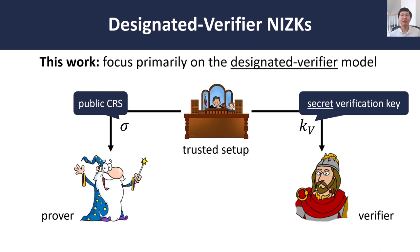In all of this work, we are going to focus on the common reference string model, where first there is a trusted setup algorithm that generates a common reference string that is known to both the prover and the verifier. In addition, we will oftentimes consider a relaxation of this model called the designated verifier model, where in addition to the CRS, the verifier also has access to a secret verification key that is not known to the prover. For now, we will assume that the secret verification key is also sampled by the setup algorithm.